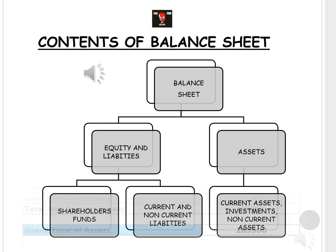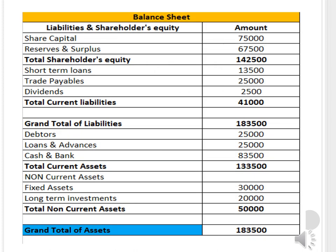Looking at a sample balance sheet, it is classified into two categories: liabilities and shareholders' equity on one side, and assets on the other. Share capital and reserves and surplus represent what the company owes to shareholders. Short-term loans, trade payables, and dividends are all current liabilities — no long-term liabilities are mentioned in this sample. Debtors, loans and advances, and cash and bank are current assets. Fixed assets are non-current assets, and long-term investments are also listed, giving us the total assets.